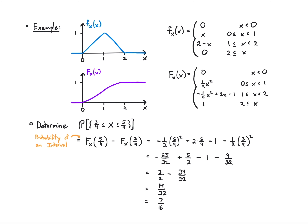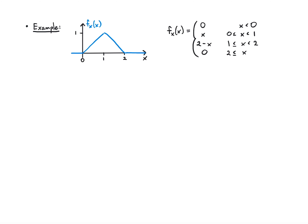Now let's compute the expected value. Before doing any calculation, I should try to guess what it is. The plot looks symmetric and is symmetric about one, so I expect E[X] = 1. That seems to be the center of mass. We'll verify this through calculation.